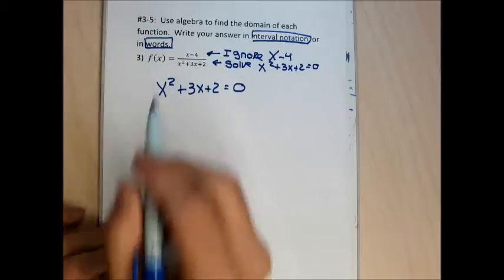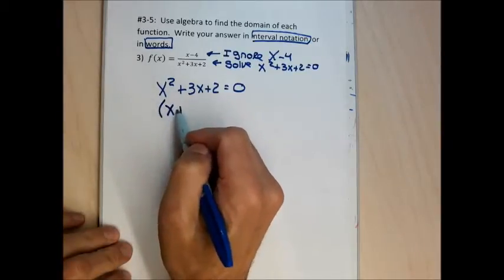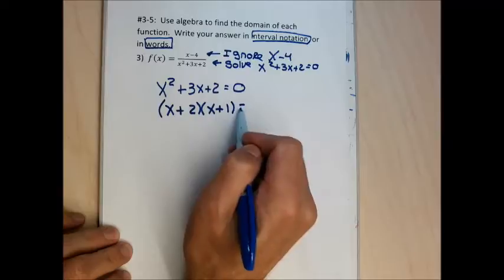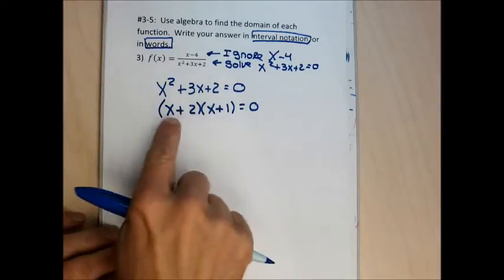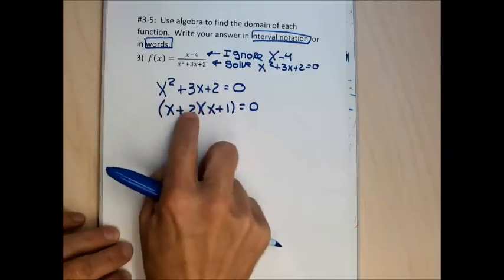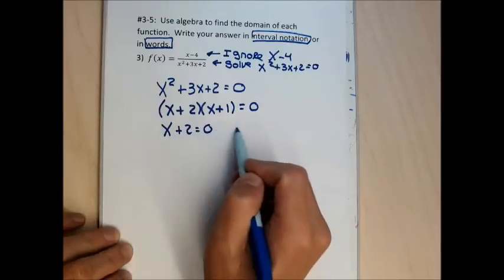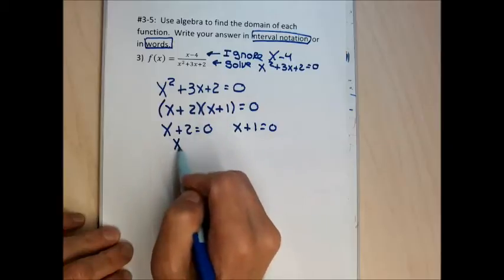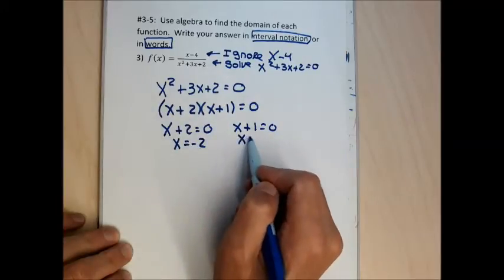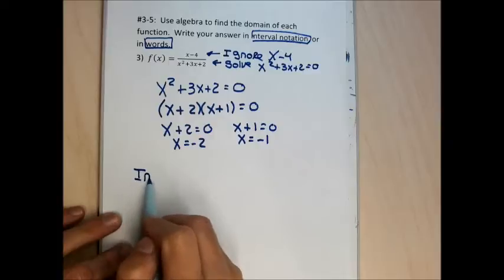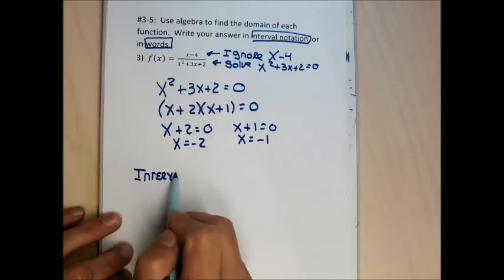Fractions aren't undefined when the numerator is zero; they're undefined when the denominator equals zero — that's what I'm finding. I factor x squared plus 3x plus 2 into (x + 2)(x + 1). The last terms multiply to 2 and add to 3, so it factors easily. Setting each factor equal to zero gives x = -2 and x = -1. These are the numbers to exclude from the domain — writing just those equations is not interval notation and is not a correct complete answer.